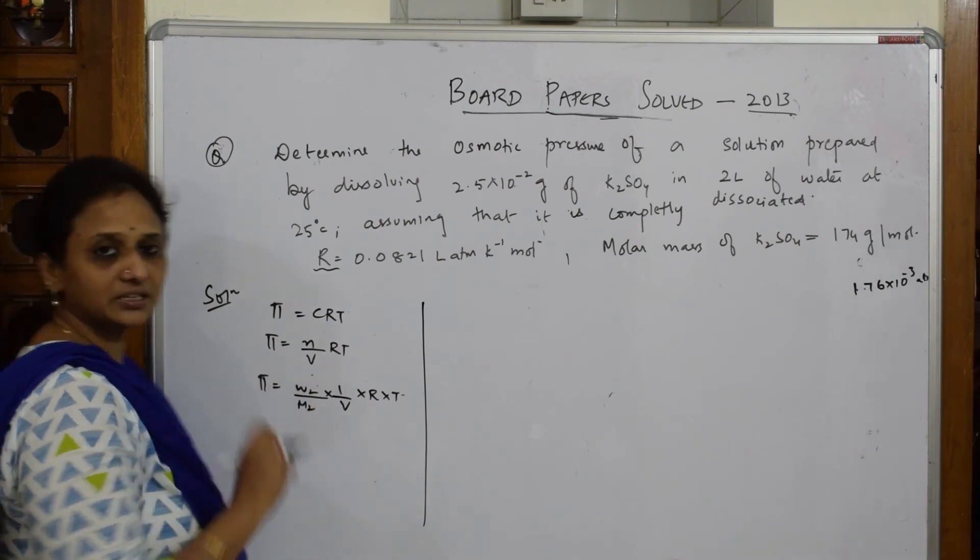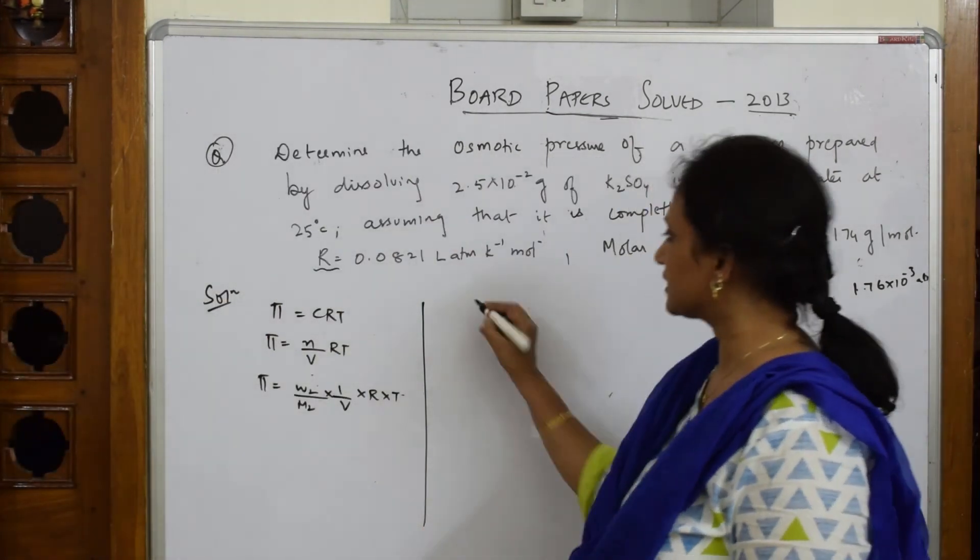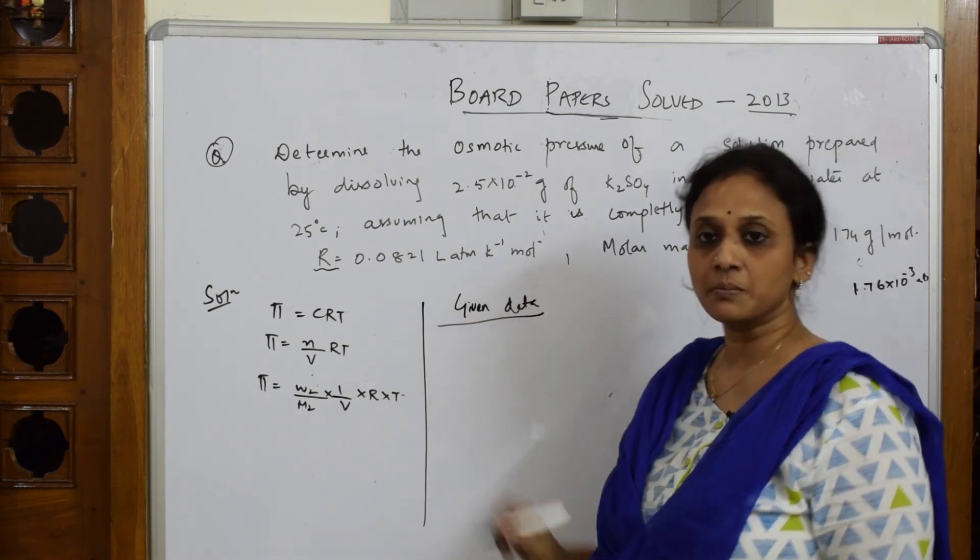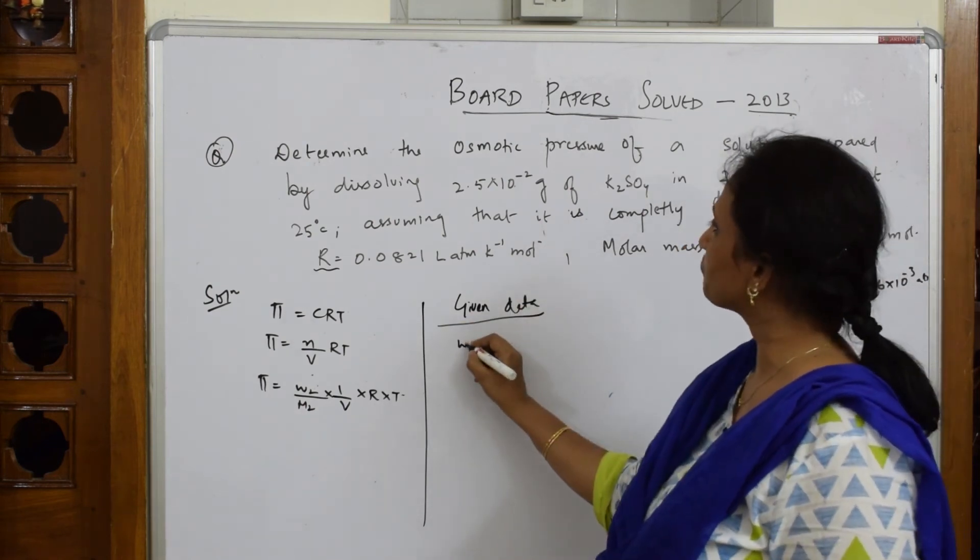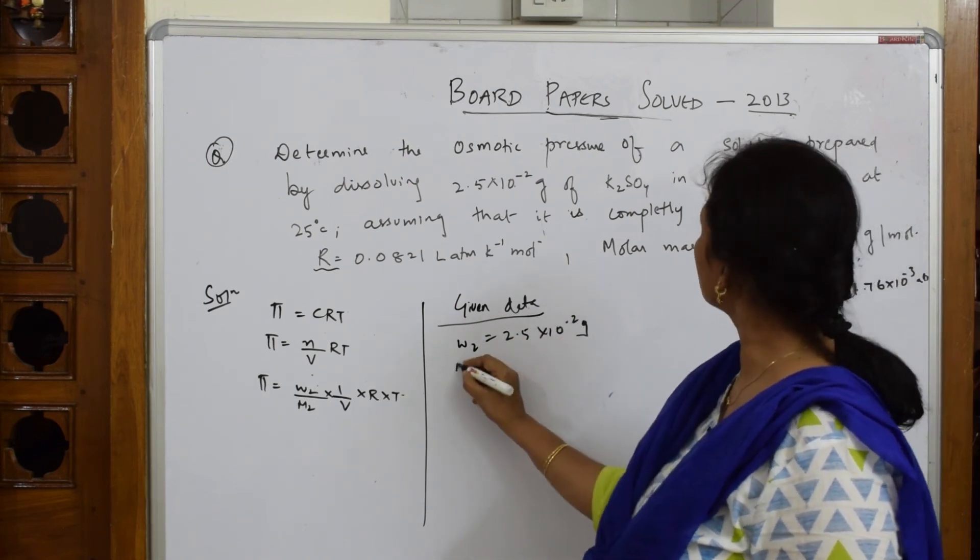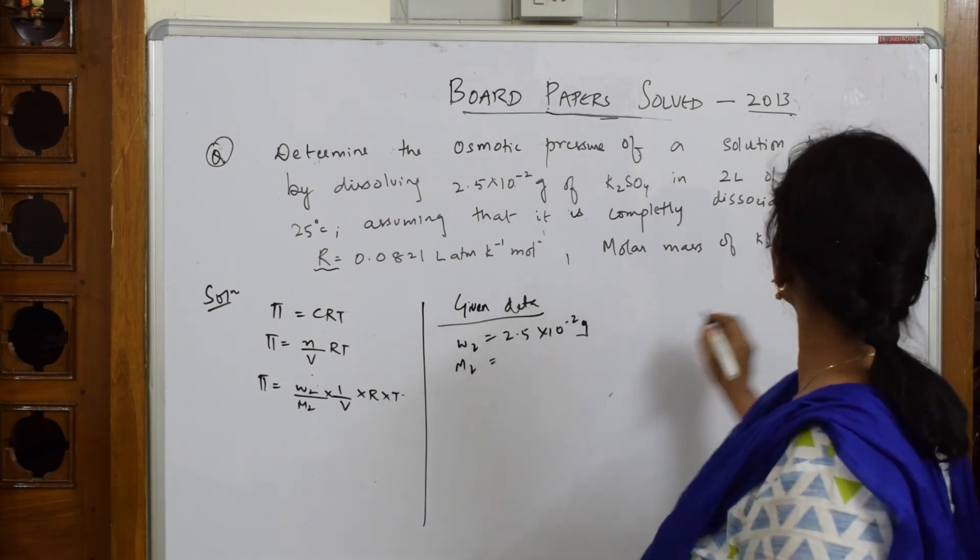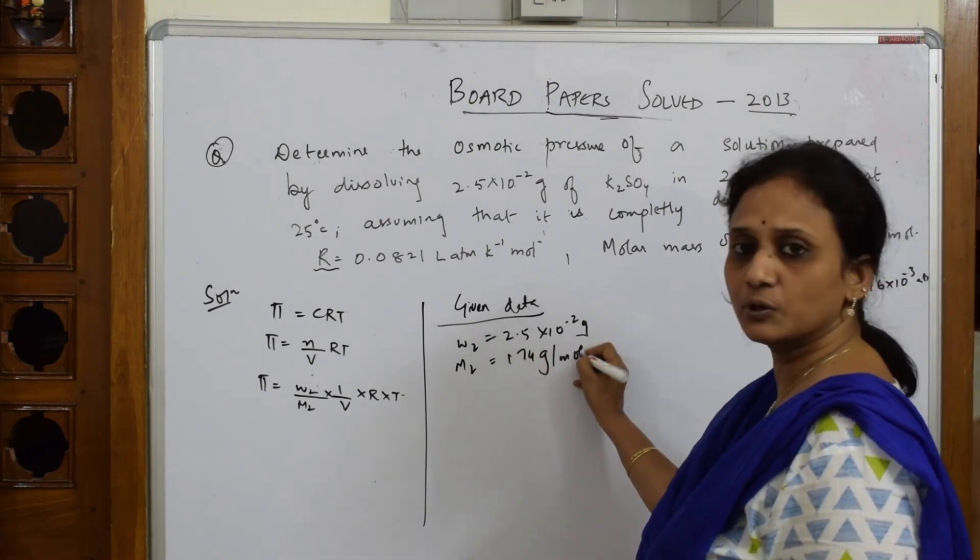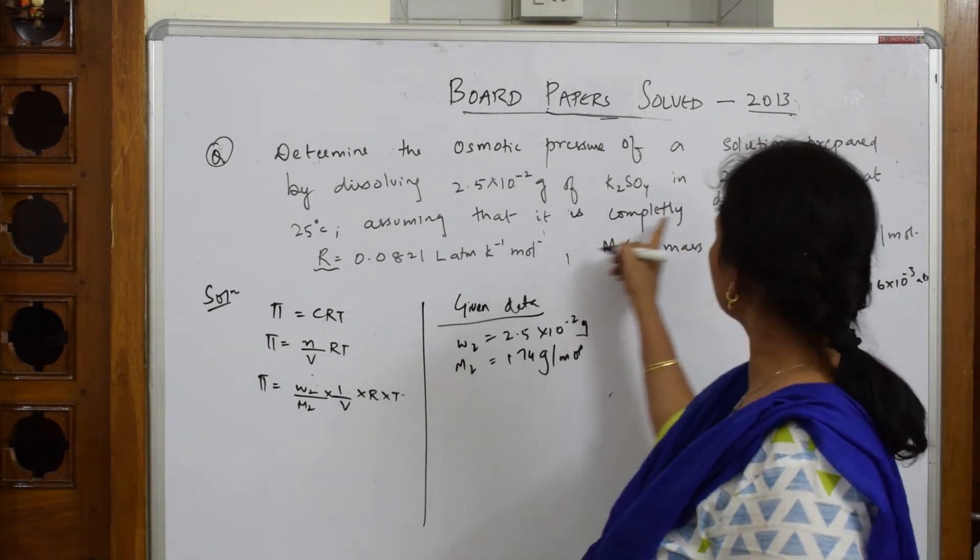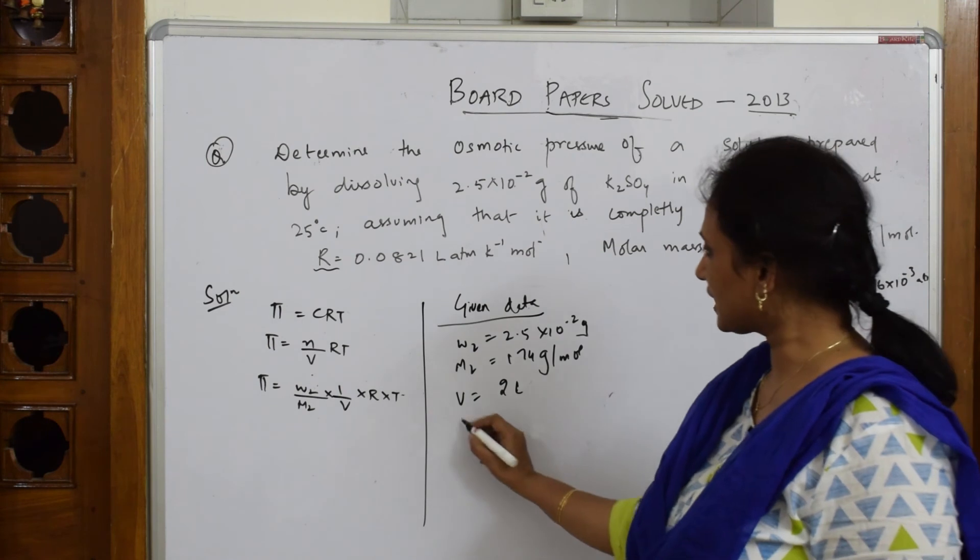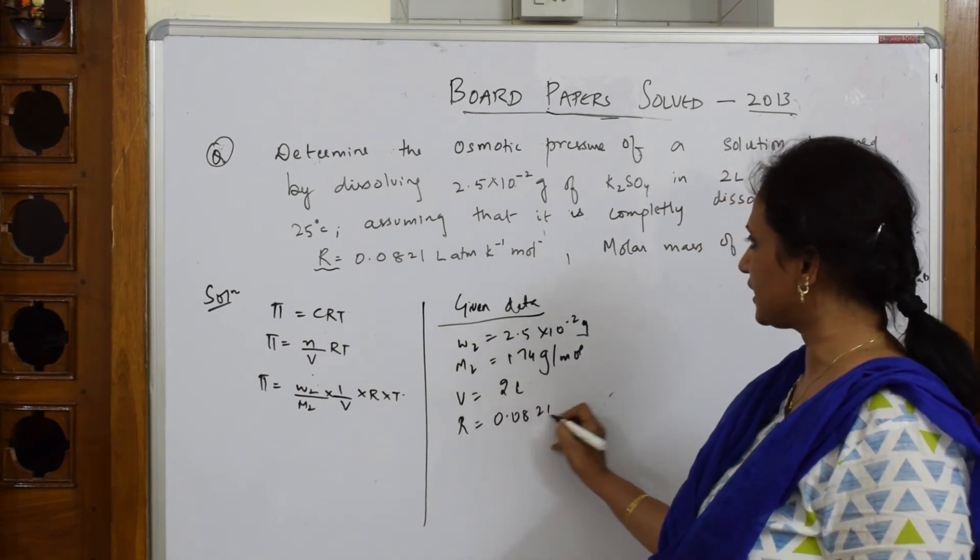Now let us write the given data. What is W2? W2 is 2.5 × 10^-2 grams. What is M2? Given to us is 174 gram per mole. What is the volume given to us? Volume given is 2 liters.